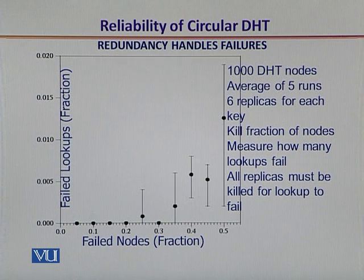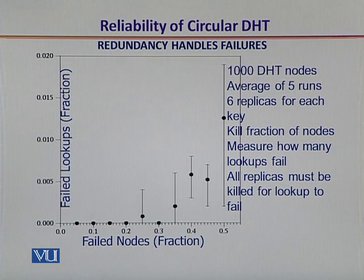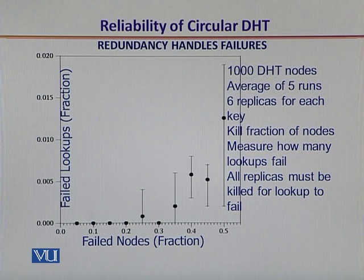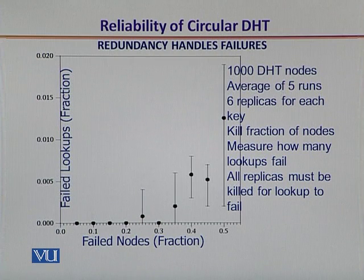This particular plot has been referenced from one of the papers cited later. It shows a configuration of 1000 DHT nodes. The overall lookup process, searching for the content, comprises 5 runs and the key is replicated over 6 peers. In order to assess the redundancy and its effect on handling failures, a fraction of nodes is killed or disabled and then the number of lookups that actually failed is determined. A lookup is considered a failure when all the replicas for that particular lookup are not available.